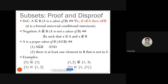For example, {1} is a subset of {1}. The set {1} is a proper subset of {1,2} because the second set contains at least one more element. Also, {1,2} is not a subset of {1,3}. The set {1} is a proper subset of the set containing {1} as an element. Note that elements of a set can themselves be sets.